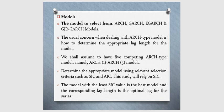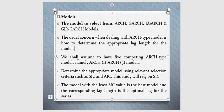The usual concern when dealing with ARCH type model is how to determine the appropriate lag length for the model. We shall assume to have five competing ARCH type models, namely ARCH 1 to ARCH 5 models. Next up is to determine the appropriate model using relevant selection criteria such as SIC which is Schwarz Information Criterion and AIC which is Akaike Information Criterion. This study will however rely on SIC. The model with the least SIC value is the best model and the corresponding lag length is the optimal lag length for this series.